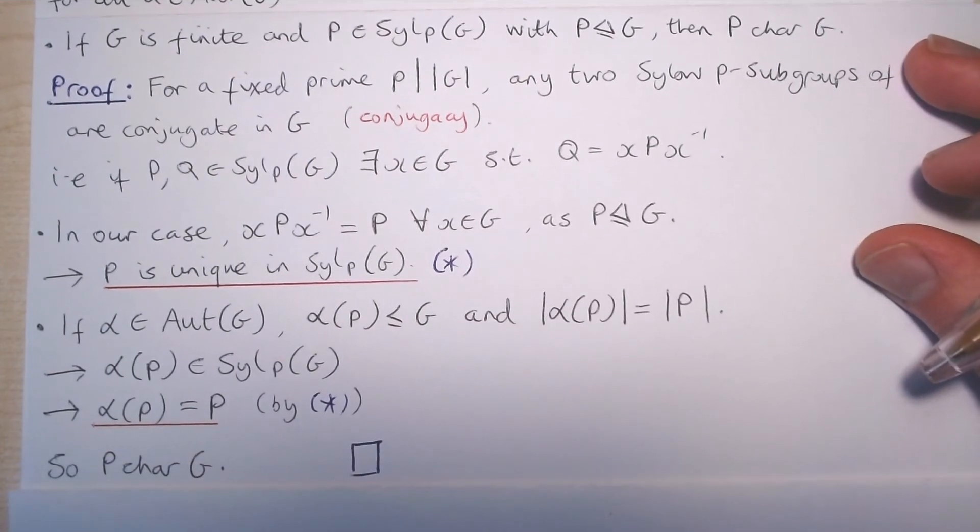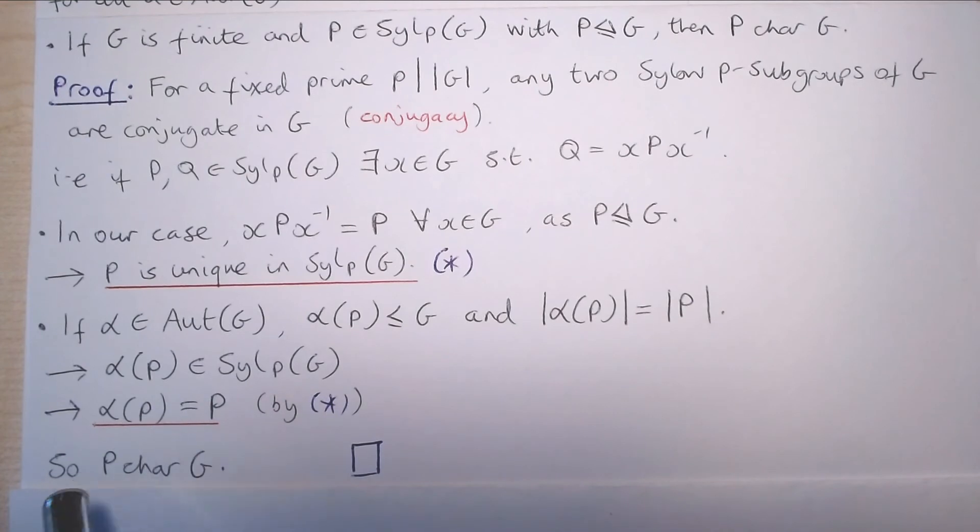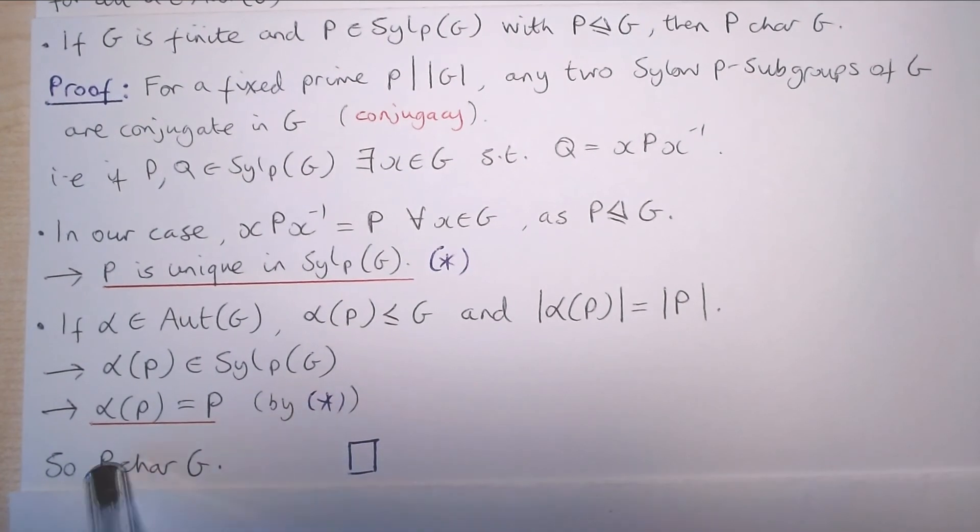What this says is that every automorphism of G fixes the subgroup P of G. In other words, P is characteristic in G.